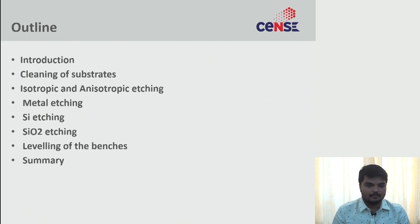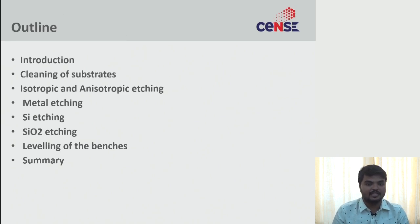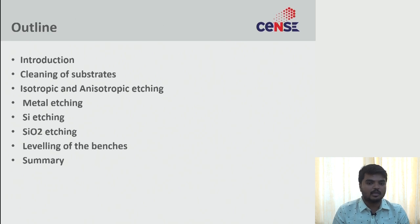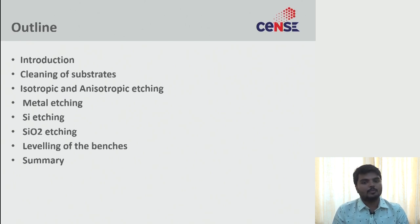The outline covers: first, what wet-etch is and how it works; then cleaning of substrates, which is a major focus. We'll look at different types of contamination — organic, inorganic, ionic, and metallic — and how we adjust the cleaning process based on contamination type.